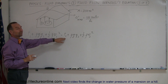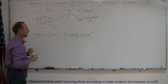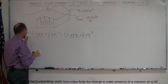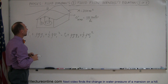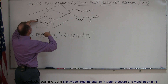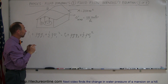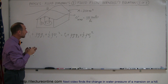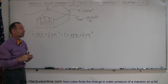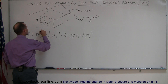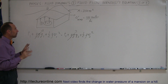Inside the house we assume atmospheric pressure. The pressure outside will likely be less than atmospheric pressure. Since we're dealing with air, which has very low density — about 1.29 kg/m³ — a few meters of height difference makes very little difference in pressure. So we can ignore the gravitational height terms on both sides of the equation.